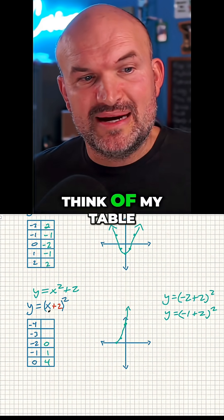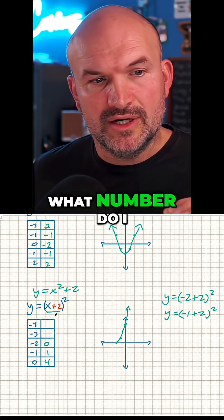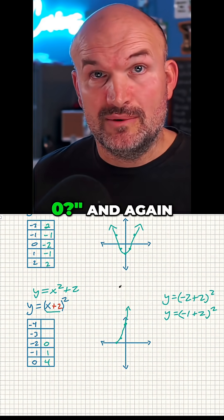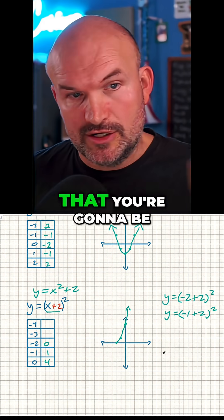So when I'm creating my table, I'm looking at the inside of my function. I'm saying, what number do I need to make that zero? You're probably going to have some more difficult equations that you're going to be working on.